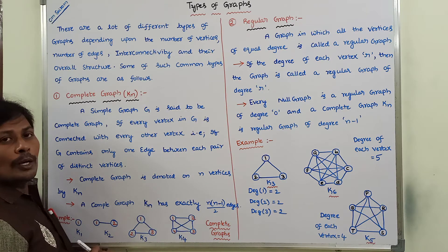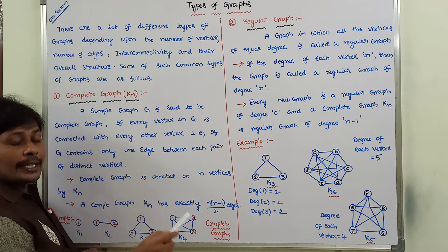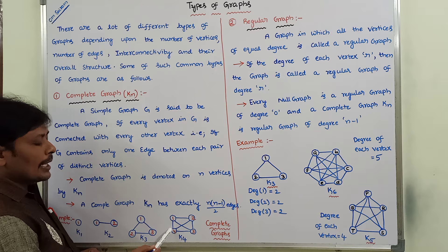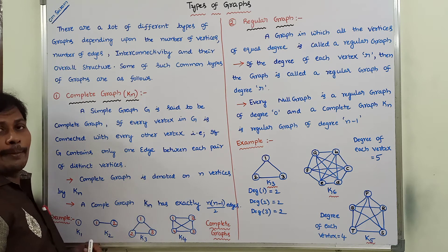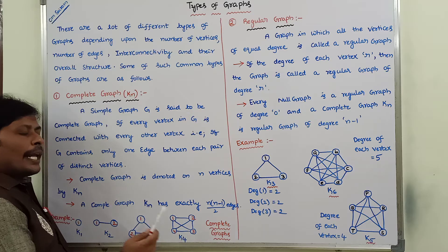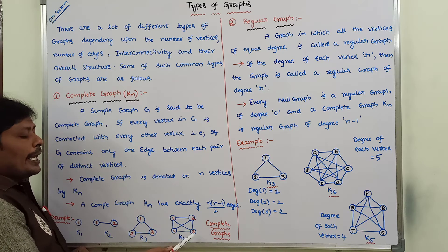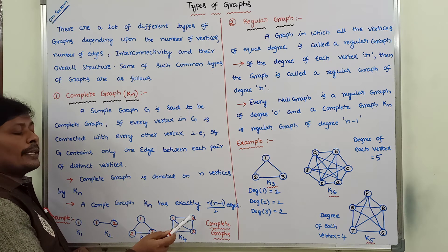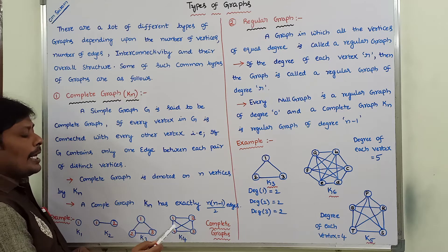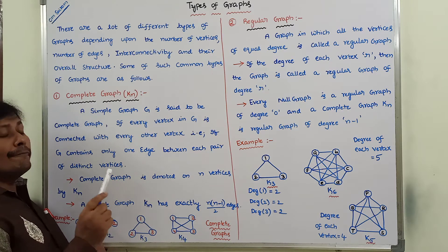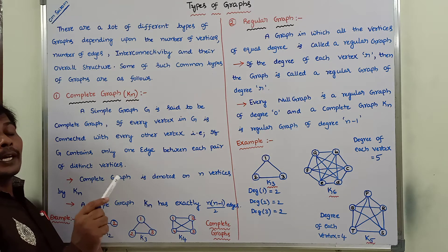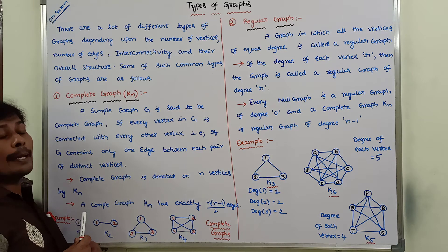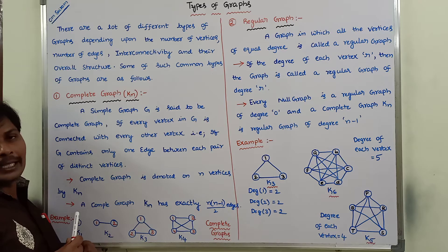Every vertex in the graph is connected with the remaining vertices. Vertex 2 is connected with 1, 4, and 3. Similarly, vertex 3 is connected with 2, 1, and 4. Every vertex in the given graph is connected with the remaining vertices, so that type of graph is called a complete graph.